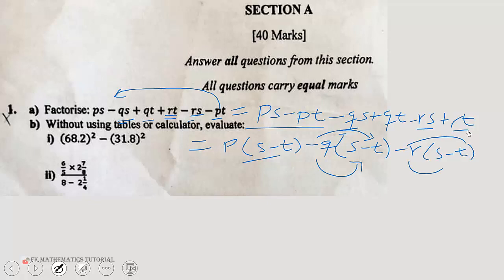So with this done what do we do next? You can see that s minus t, s minus t, s minus t is common to all. So we bring it, we factor it: s minus t, and we are left with p here, we are left with minus q here, we are left with minus r here. So that is the factored form of the given expression.